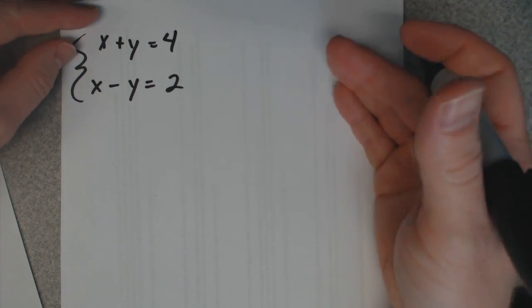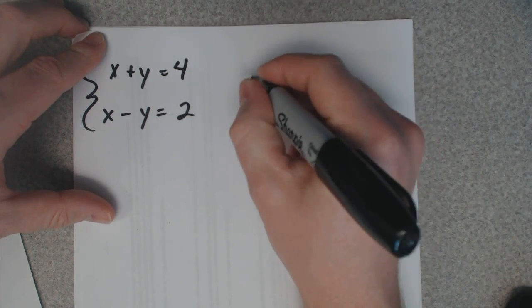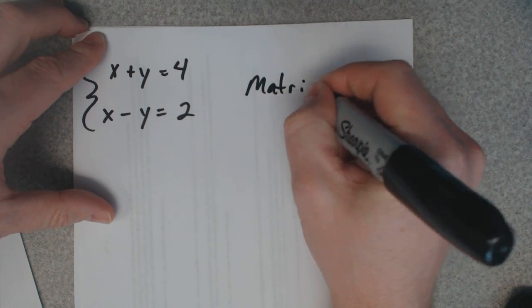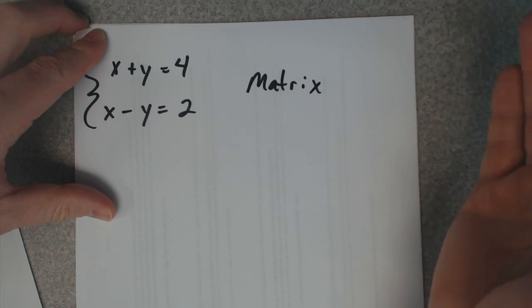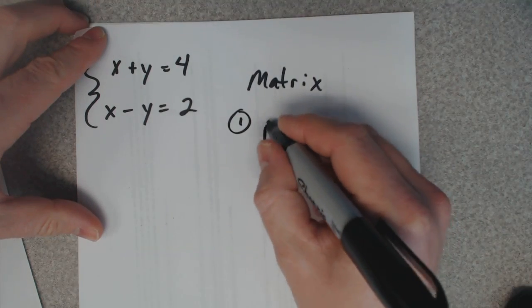When you've got a system, there's really two ways that you can use a matrix to solve this. Whenever you're dealing with matrices, the first way is you create an augmented matrix.